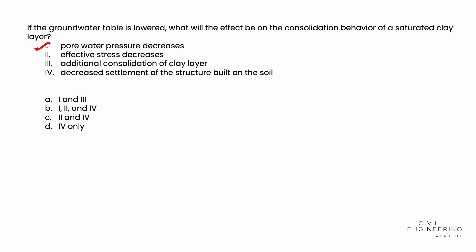Then, this decrease in pore water pressure causes an increase in effective stress. But Roman numeral two says effective stress decreases. So because it says decreases, Roman numeral two is wrong. So we will put an X through that one.